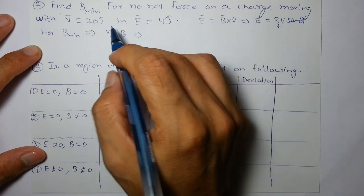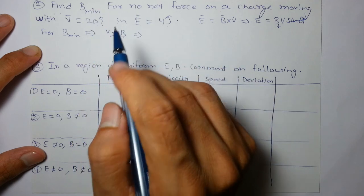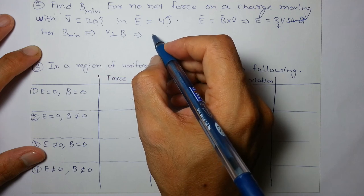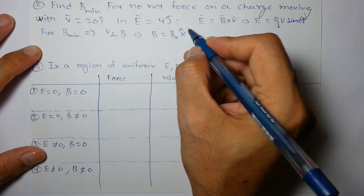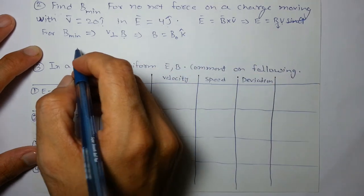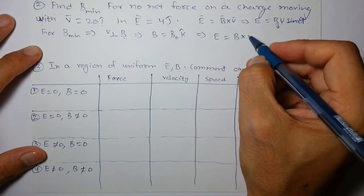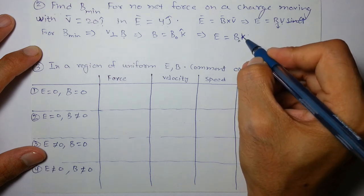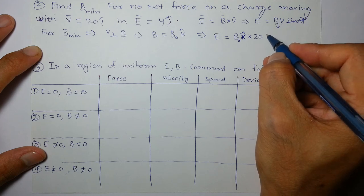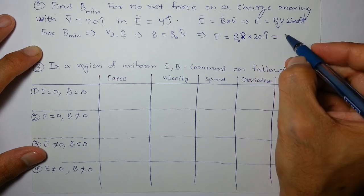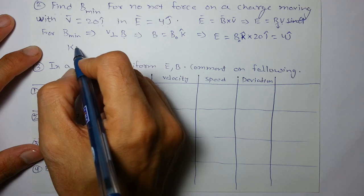So we are taking perpendicular. So it should be some I cap here, J cap here. So only option left is K cap. So E is equal to B cross V, B_naught K cap cross 20 I cap. And this is 4 J cap. So it should be 4 J cap. So first, K cross I.